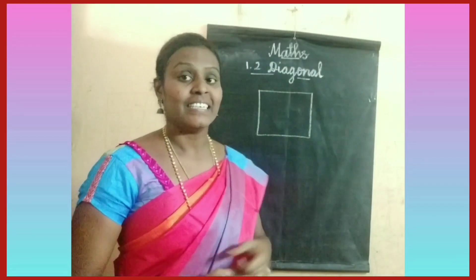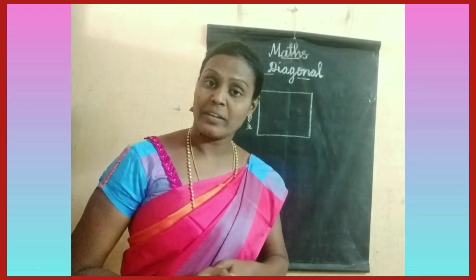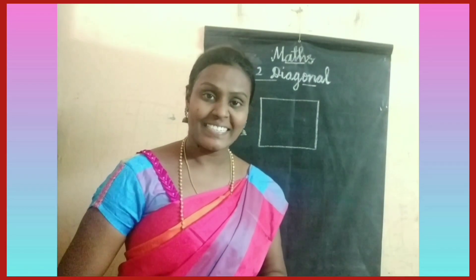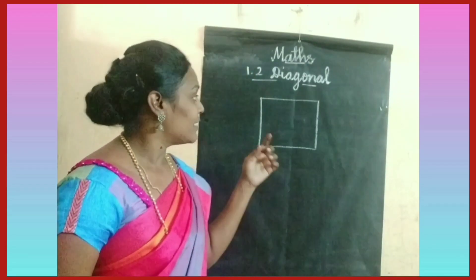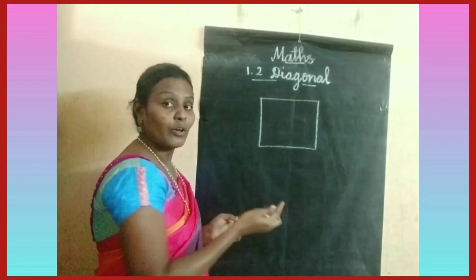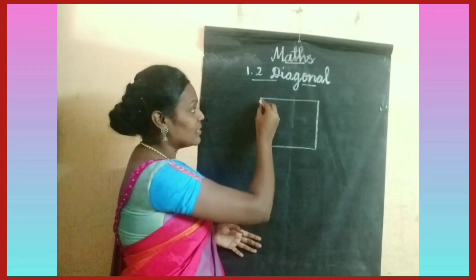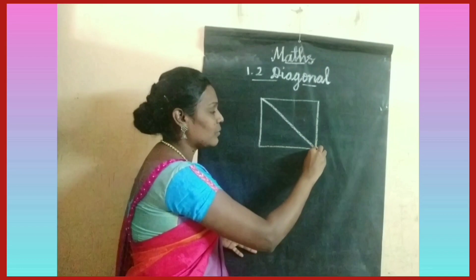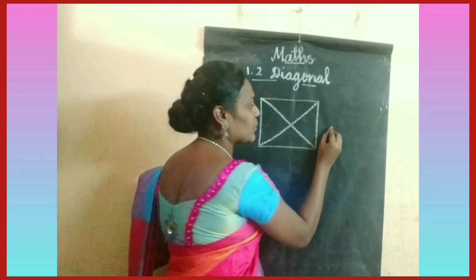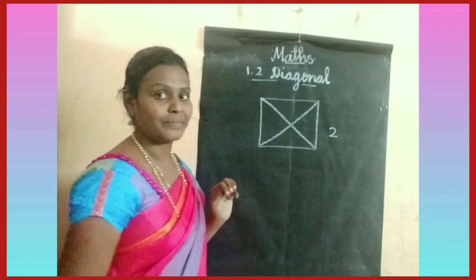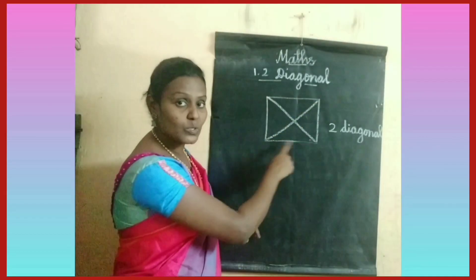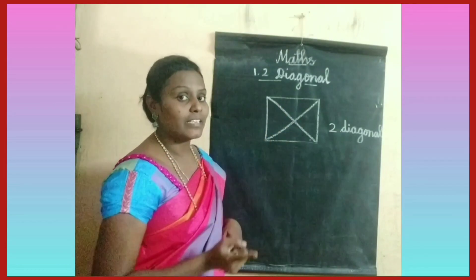Diagonal. A diagonal is the line joining opposite corners of a geometrical shape. Let us find the diagonals of a square. A square has 4 corners. The diagonal joins the opposite corners - there are 2 diagonals in a square. The line joining opposite corners of a square is called the diagonals of the square.